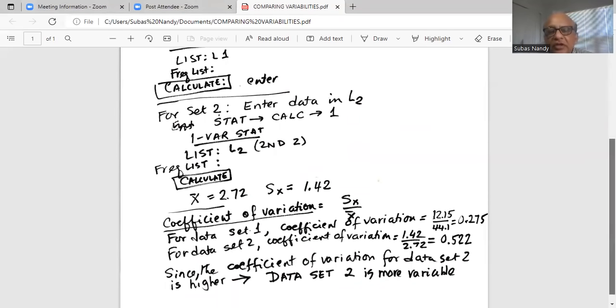So we notice the second data set has a higher coefficient of variation. Therefore, data set 2 is more variable. What does it really mean? It means that for the second data set, the standard deviation is 52.2 percent of the mean.